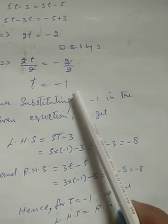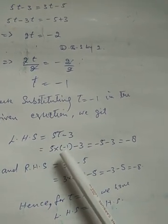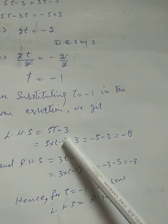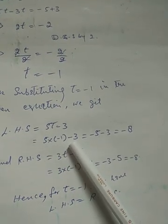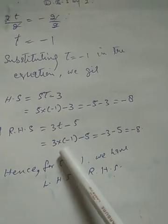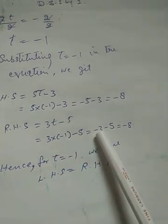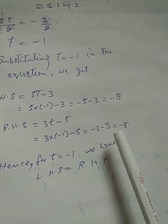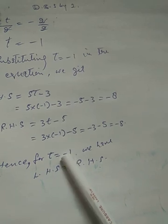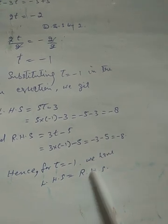Substituting t equals minus 1 in the given equation. LHS: 5t minus 3 equals 5 into minus 1 minus 3 equals minus 5 minus 3 equals minus 8. RHS: 3t minus 5 equals 3 into minus 1 minus 5 equals minus 3 minus 5 equals minus 8. We have LHS equals RHS.